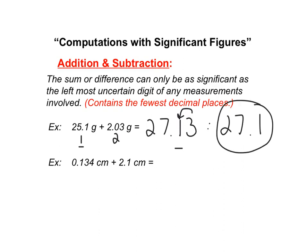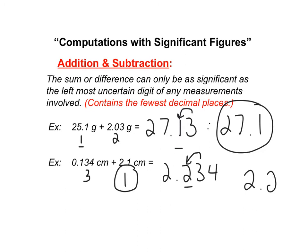Let's try one more example. This number has three decimal places, and this number has only one decimal place, so my answer should only have one. Computing 0.134 + 2.1 gives 2.234. I'm only allowed one decimal place, so the 3 rounds down, and my answer is 2.2.